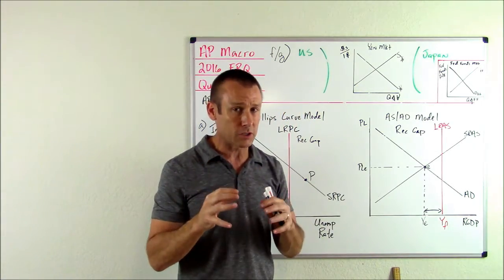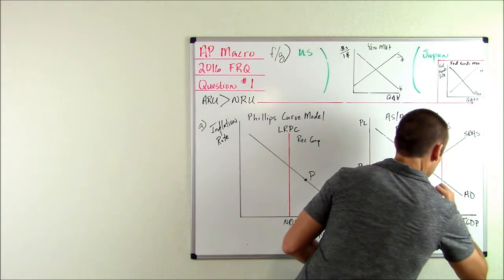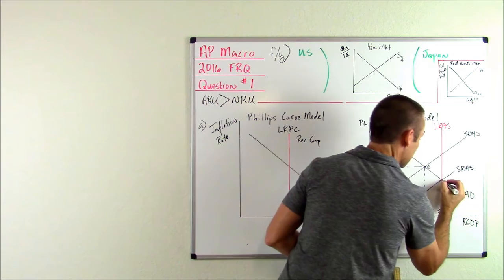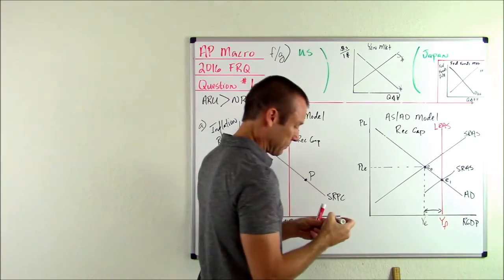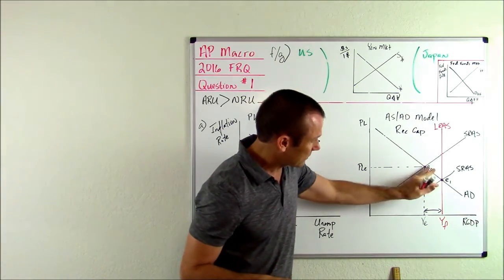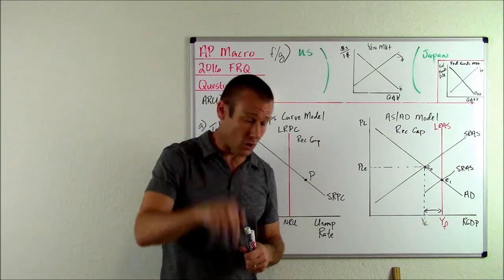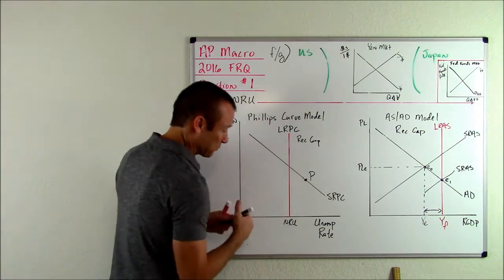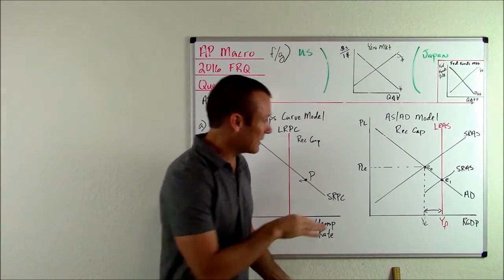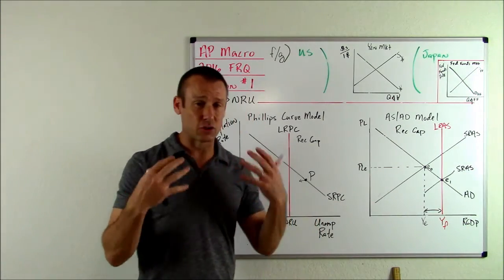What would happen is our SRAS shifts right to a new equilibrium. Going from e-sub-0 to e-sub-1, real GDP is increasing, meaning the unemployment rate is going down. From point B, the unemployment rate needs to decrease. We can see there's downward pressure on the price level — the AS-AD model actually shows deflation, though in the real economy we might just get disinflation.